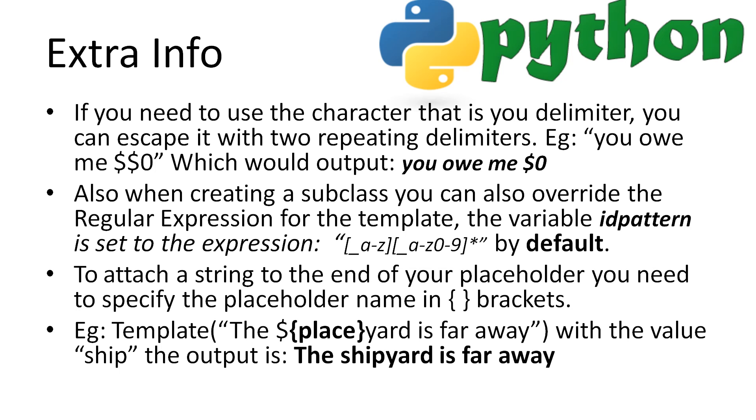Some things to note about templates. You can escape the delimiter if needed by using two consecutive delimiters. For example, template you owe me $$0 will use the dollar sign as the character rather than a placeholder. We can also use custom regular expressions on templates when we create a subclass and override the ID pattern variable. By default, it's set to accept underscores and alpha numeric characters. We can also use curly braces to identify which part of the delimiter is the placeholder variable name. In this example, I have the template the ${place}yard is far away, where the yard is appended to the result of the placeholder. So if we use the value ship, the output would be the shipyard is far away. But this could be replaced with farm or a number of other places.